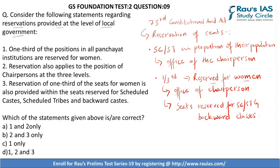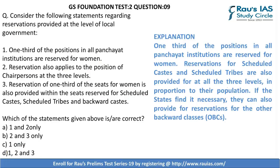The first statement — one-third of positions in all Panchayat institutions are reserved for women — is correct. Second — reservation also applies to the position of chairpersons at all three levels — is correct. Third — reservation of one-third of seats for women is also provided within the seats reserved for Scheduled Castes, Scheduled Tribes, and backward classes — is also correct. Hence, the right answer is D — 1, 2, and 3. Please look at the explanation for more information.